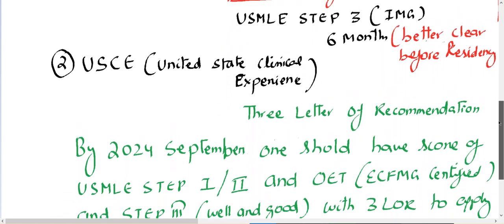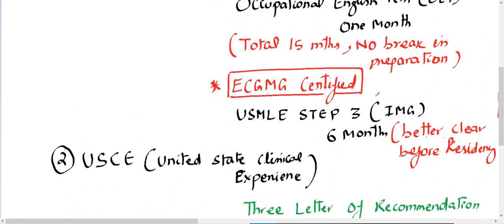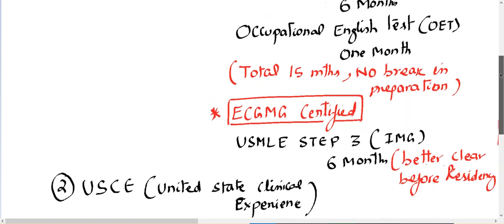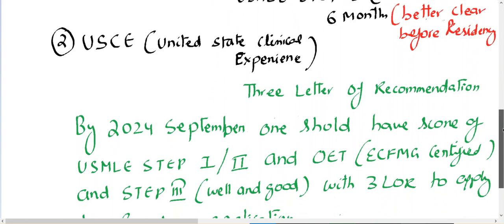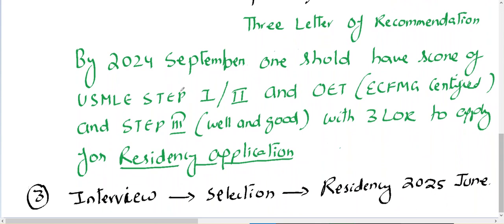After becoming ECFMG certified — meaning you have cleared Step 1, Step 2, and the Occupational Language Test — you can go to the US and do research, work as an observer, or complete an externship to gain clinical experience. You will then need at least three letters of recommendation. By September 2021, ECFMG certification requires Step 1, Step 2, and the Occupational English Test scores.